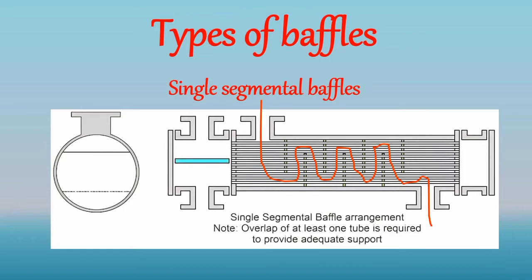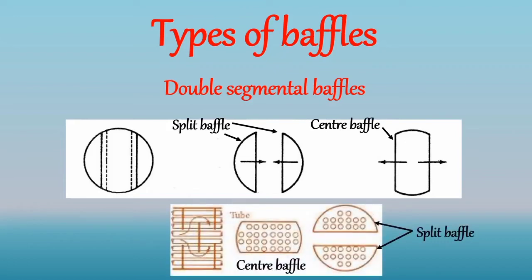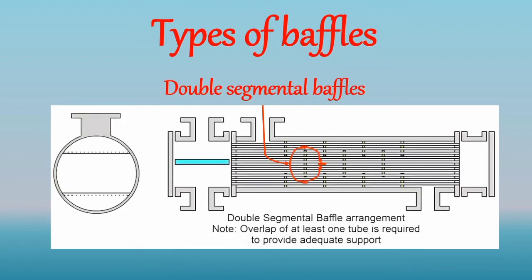The next type of segmental baffle is the double segmental baffle. In the double segmental baffle, the baffle plate is cut in such a way that we get two parts: a center baffle and a split baffle. There will be a small overlap between the center baffle and split baffle, and in this overlap minimum one tube row can adjust. Hence it is very useful in large tube bundles. These baffles split the shell side flow into two currents around each second baffle, due to which the velocity of fluid decreases, and hence pressure drop also decreases and vibrational risk is also reduced.